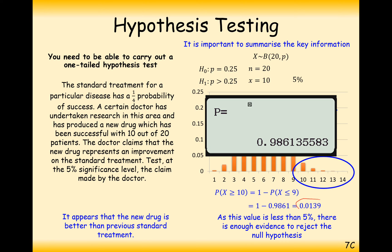The key part is always this final probability value. If it were bigger than 5%, we would say there is not enough evidence to reject the null hypothesis — there's enough random chance that 10 out of 20 patients improved. But in this case it was 1.4%, which is really rare, so there must be something wrong with our initial hypothesis probability.